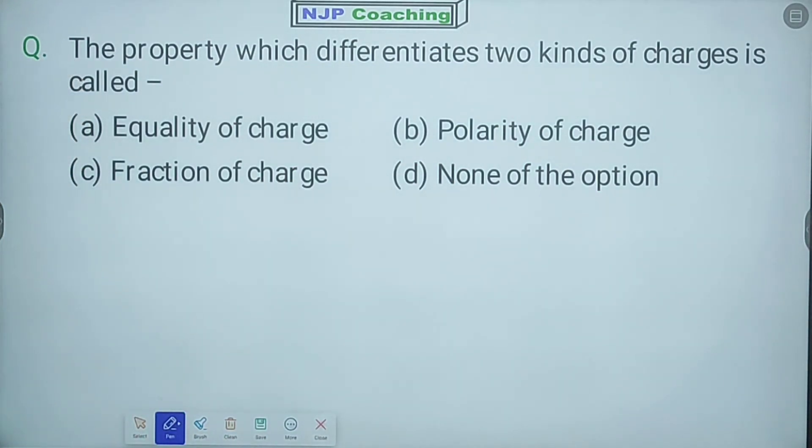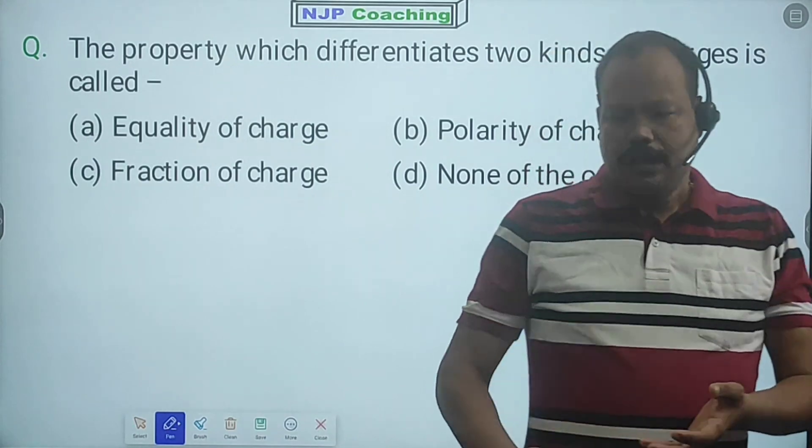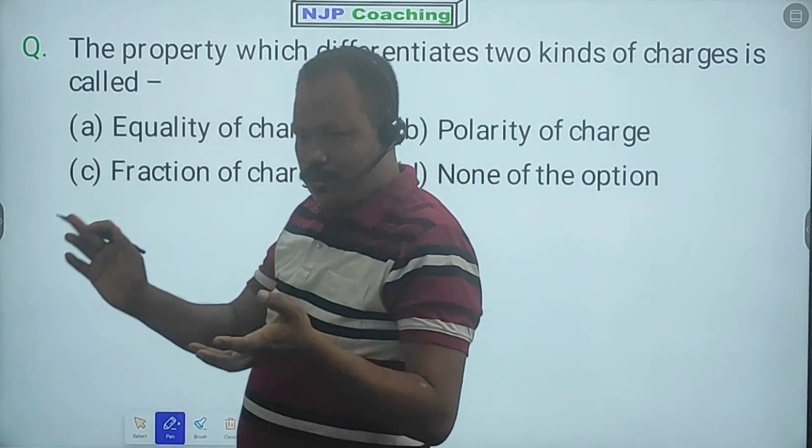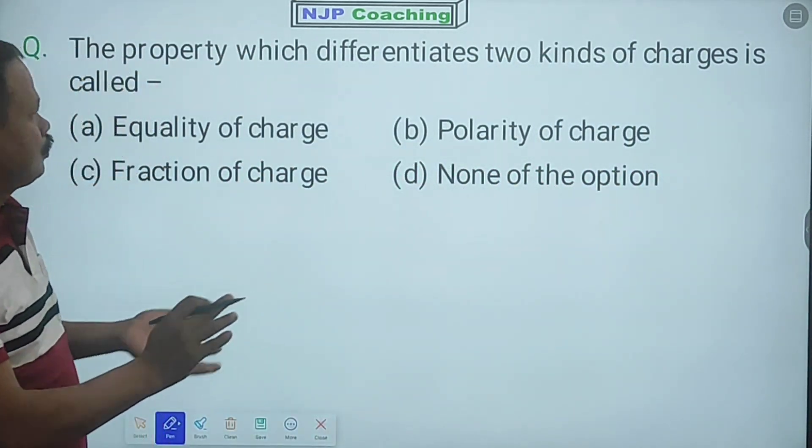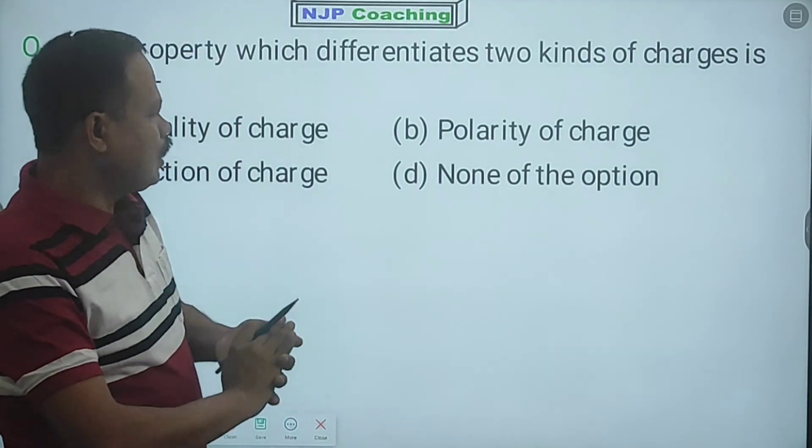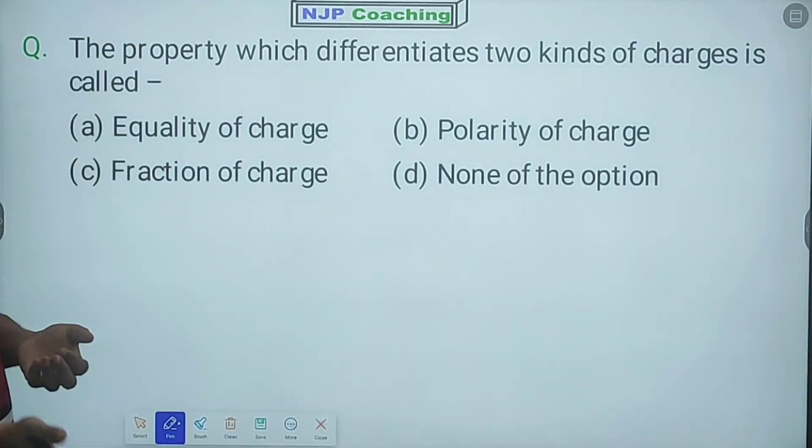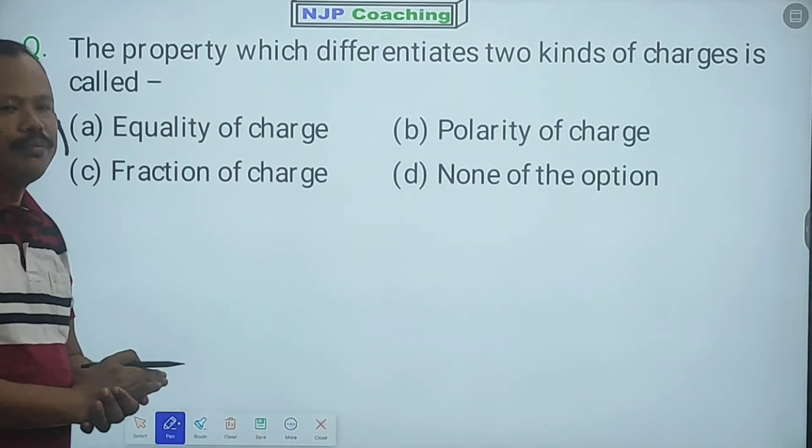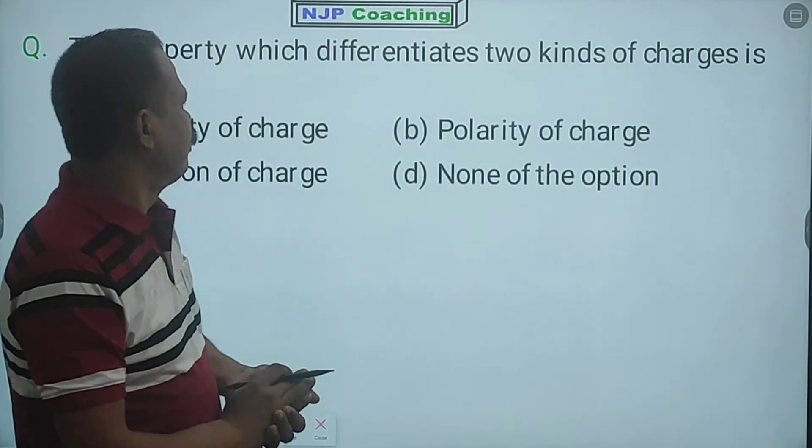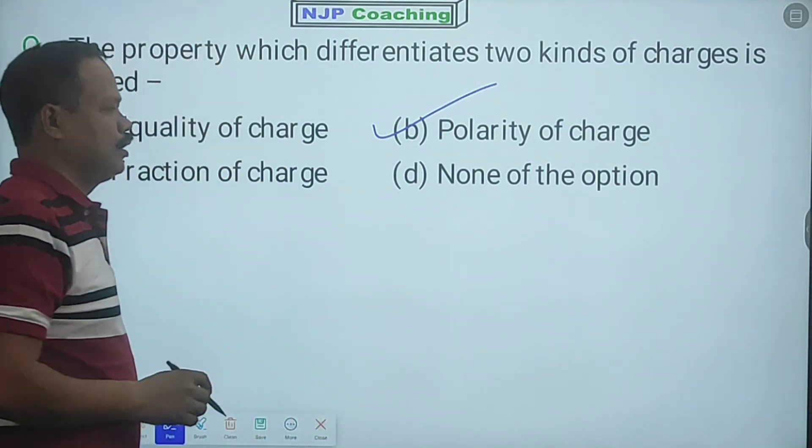This question: the property which differentiates two kinds of charges is called? Two types of charges - what property differentiates them? Different kinds of charges means positive and negative. So we can differentiate them by polarity. Polarity means positive or negative. Same charges repel, opposite charges attract. The property which differentiates two kinds of charges is called polarity of charge.